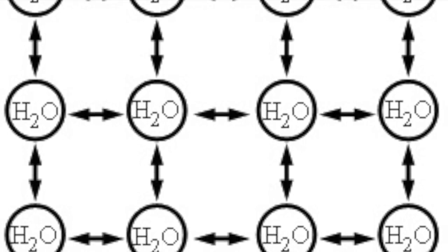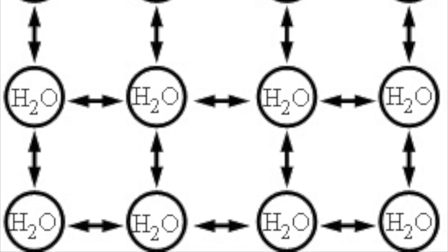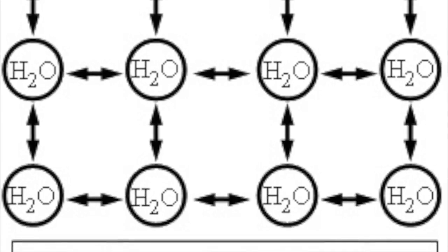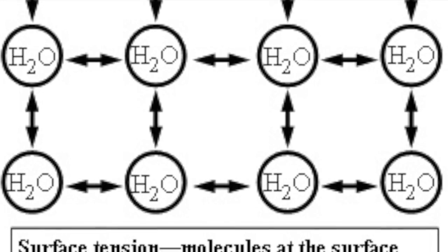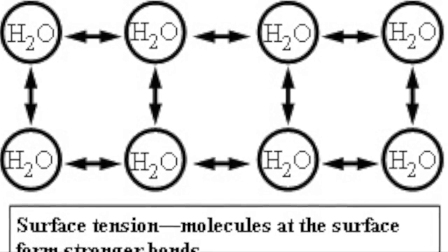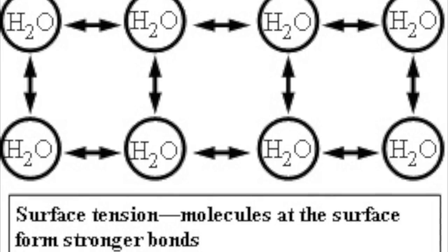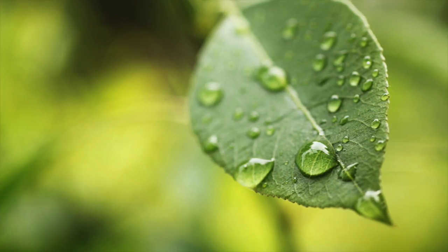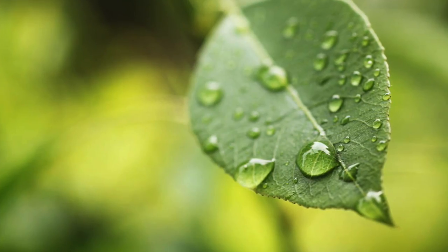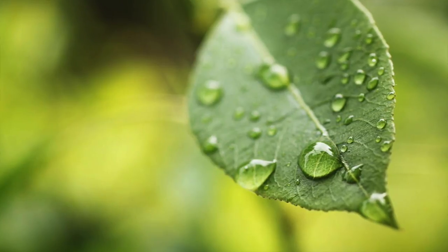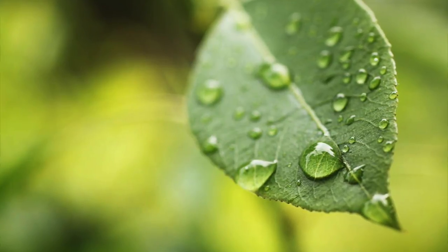If you add a little bit of soap to that glass of water, the paperclip will sink to the bottom because of the change in the surface tension. This image shows how the water molecules bond to each other. The surface tension of water is responsible for a lot of phenomena, not just a floating paperclip.